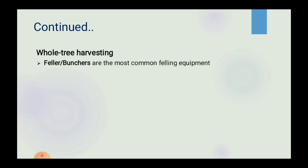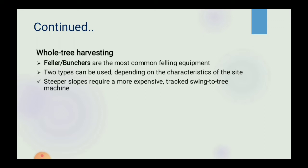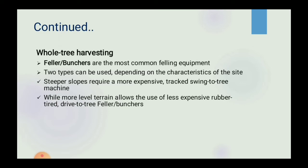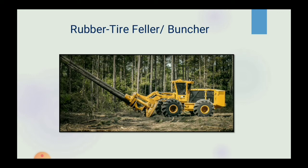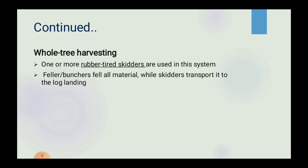Whole tree harvesting: feller bunchers are the most common felling equipment. Two types can be used depending on site characteristics. Steeper slopes require a more expensive tracked swing-to-tree machine, while more level terrain allows the use of less expensive rubber tire drive-to-tree feller bunchers. One or more rubber tire skidders are also used in this system. Feller bunchers fell all the material while skidders transport it to the log landing.